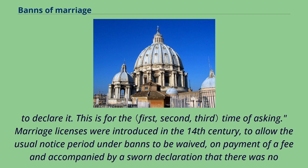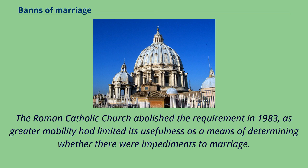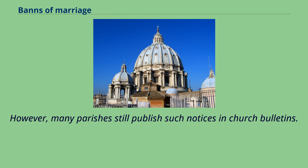Marriage licenses were introduced in the 14th century, to allow the usual notice period under banns to be waived, on payment of a fee and accompanied by a sworn declaration that there was no canonical impediment to the marriage. The Roman Catholic Church abolished the requirement in 1983, as greater mobility had limited its usefulness as a means of determining whether there were impediments to marriage. However, many parishes still publish such notices in church bulletins.